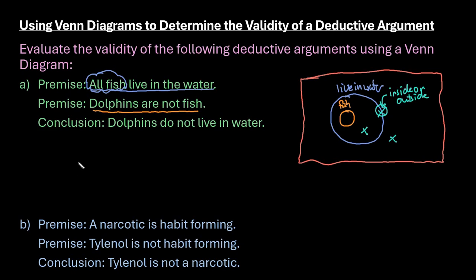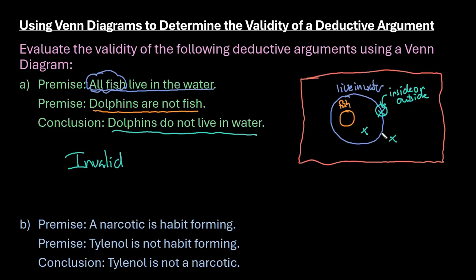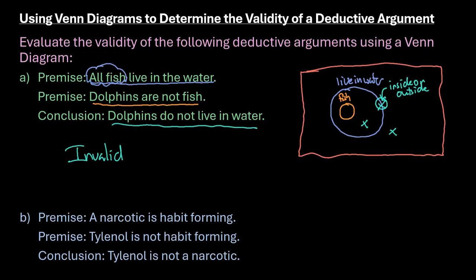This would be an invalid argument because we do not know for sure that dolphins do not live in the water. Anytime you can put the second premise in more than one spot, it does not follow logically, so it would be an invalid argument.